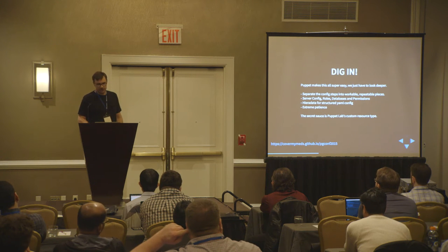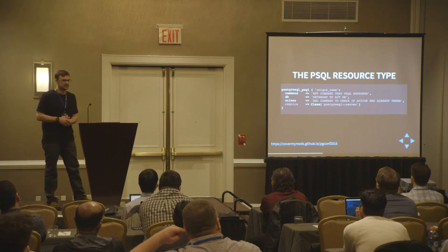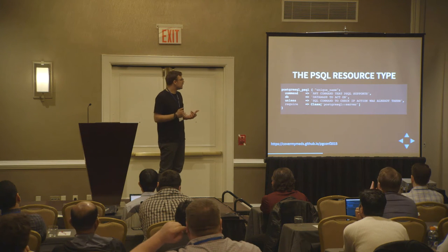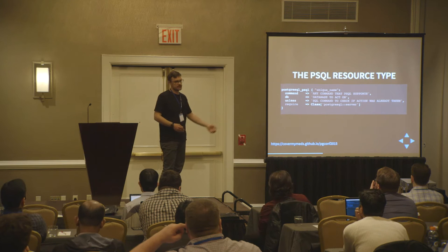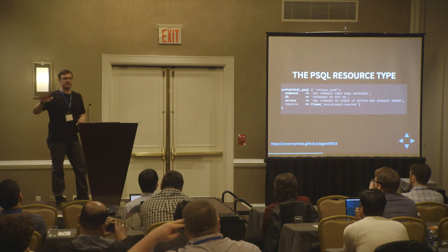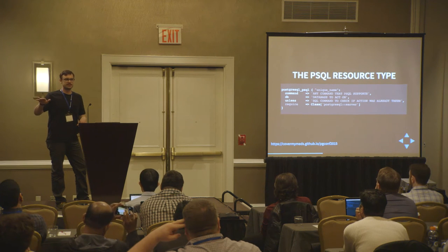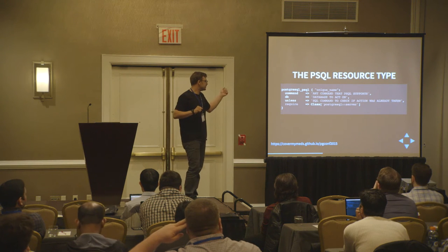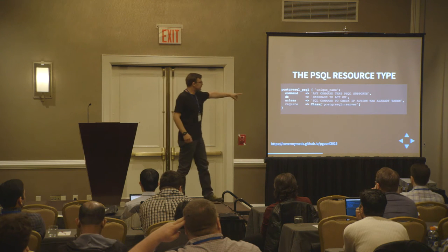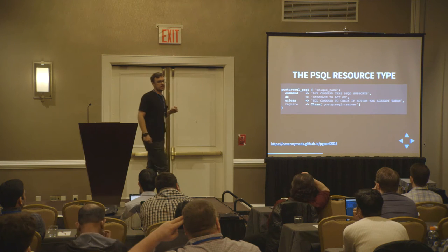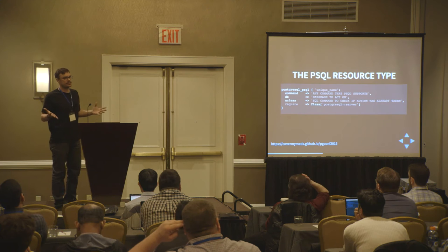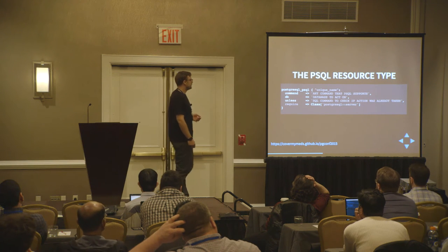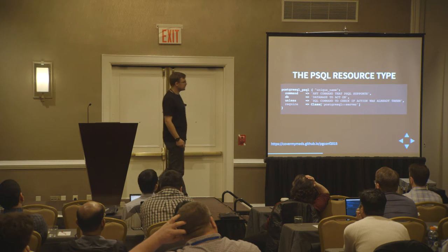The secret is that everyone knows the PSQL command. There is a postgres_psql resource in Puppet that allows you to do anything the PSQL command can do on the command line. You give it a unique name, the command you want to run, the database to run it on, and an unless statement — which is very important — that says don't do this if a condition is already satisfied. That prevents Puppet from acting over and over again. Then you require the Postgres server built in the first step.